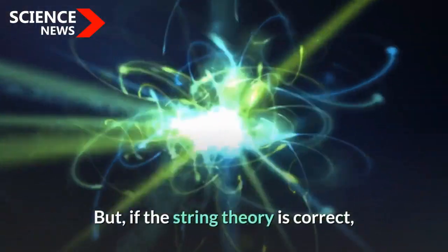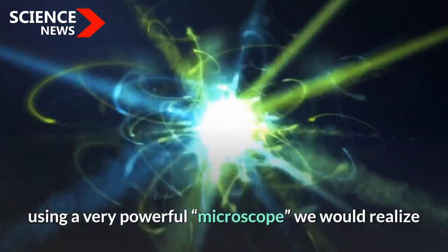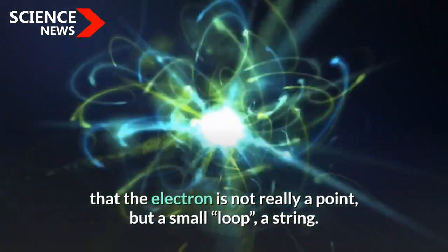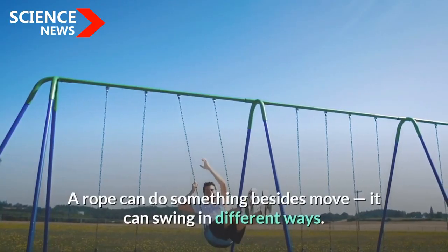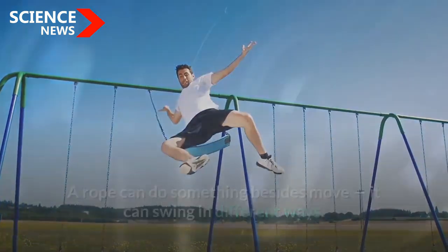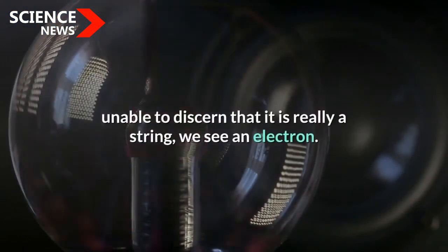But if string theory is correct, using a very powerful microscope, we would realize that the electron is not really a point but a small loop, a string. A rope can do something besides move—it can swing in different ways. If it oscillates in a certain way, then from afar, unable to discern that it is really a string, we see an electron.